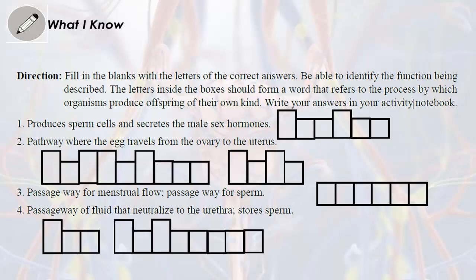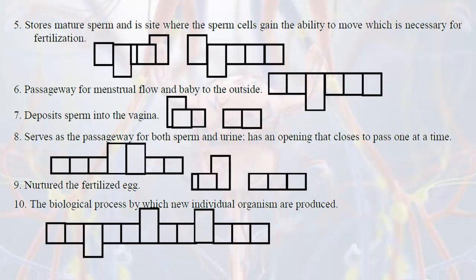1. Produces sperm cells and secretes the male's sex hormones. 2. Pathway where the egg travels from the ovary to the uterus. 3. Passageway for menstrual flow; passageway for sperm. 4. Passageway of fluid that neutralizes to the urethra; stores sperm. 5. Stores mature sperm at its site where the sperm cells gain the ability to move, which is necessary for fertilization.